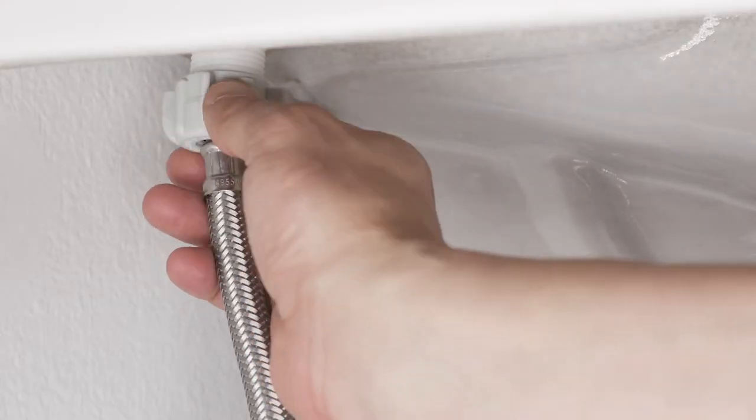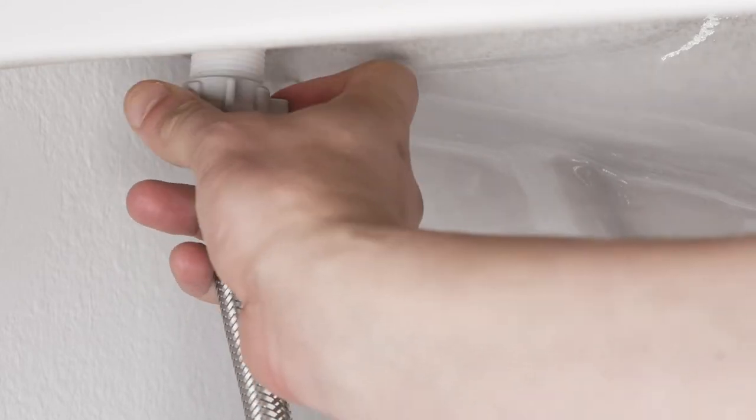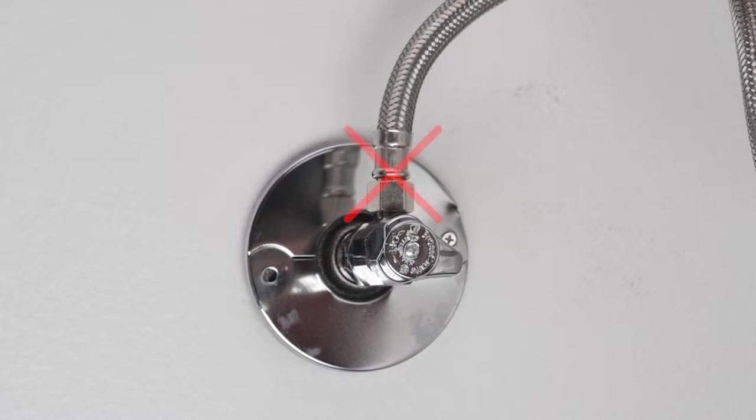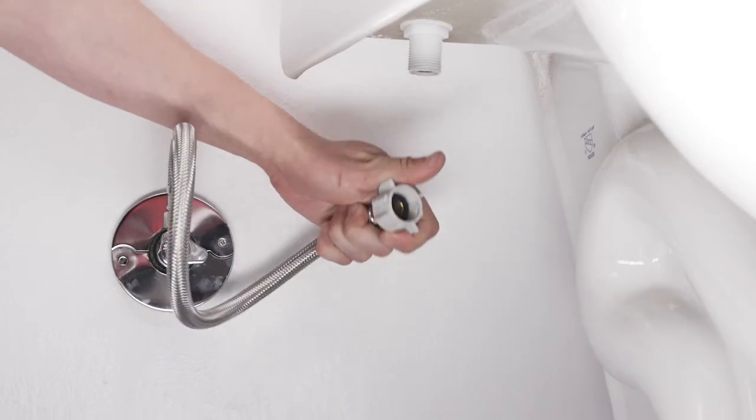Unscrew the flexible water supply line from your fill valve at the toilet. It is important to unscrew the hose from the toilet, not the shutoff valve at the wall. You may want a small bucket or towel handy to catch any residual water.